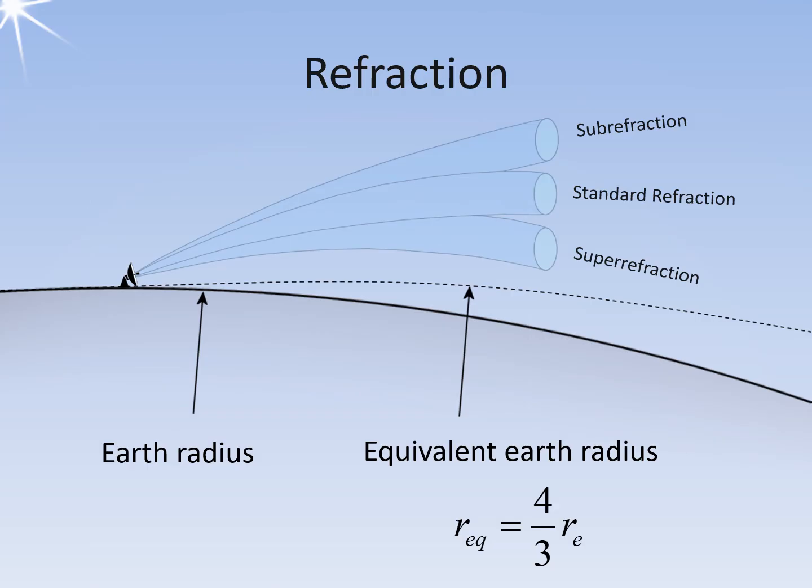Under normal propagation conditions, electromagnetic waves experience refraction due to the decreasing density of the atmosphere with increasing altitude. In denser mediums, the speed of wave propagation is slightly slower than the speed of light in a vacuum, causing the waves to bend and curve somewhat towards the earth's surface. To account for this refraction when calculating target height, the earth's radius is assumed to be four-thirds larger than its actual size — the equivalent earth radius. At this adjusted radius, the earth's surface has a curvature that approximately matches the path of the radar beam at a zero-degree elevation angle. This approximation is valid only under specific standardized refraction conditions and is highly influenced by weather.